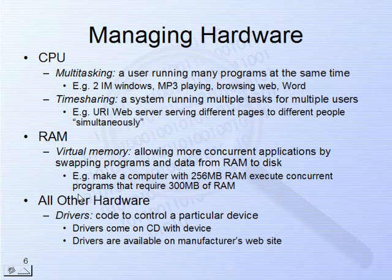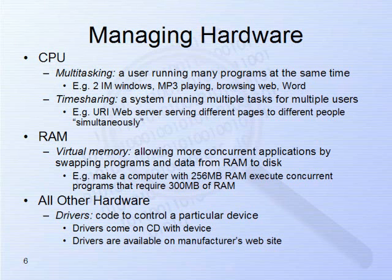Your computer manages all other hardware using something called a driver — a piece of code that goes into the operating system to control a specific device. There are drivers for specific printers like the HP-1500, different drivers for the HP-255, a driver for a Canon digital camera, and a different driver for a Kodak digital camera. Each piece of hardware needs its own driver so the operating system knows how to communicate with it. Typically, when you buy hardware such as a digital camera, scanner, monitor, or mouse, it comes with a CD containing the driver.